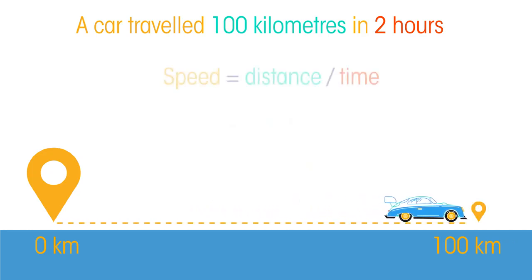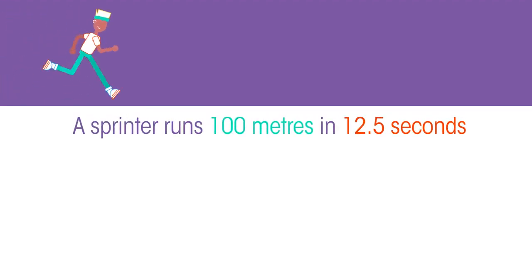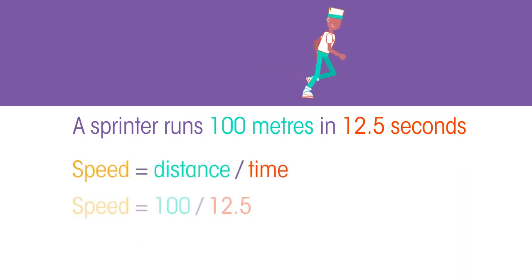So 100 divided by 2 equals 50 kilometers per hour. Now you try: a sprinter runs 100 meters in 12.5 seconds. Pause the video while you work out her speed. Did you get 8 meters per second?